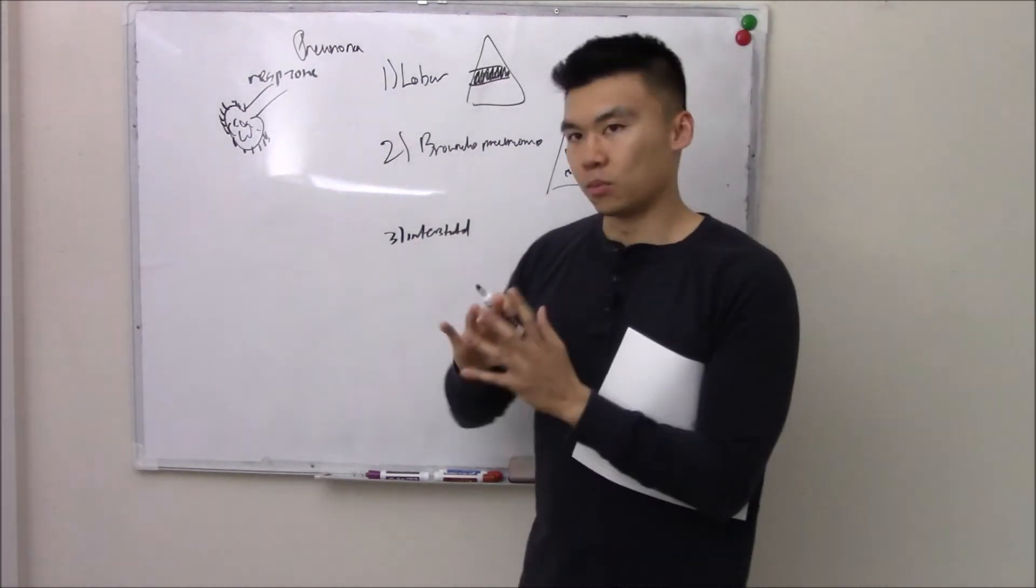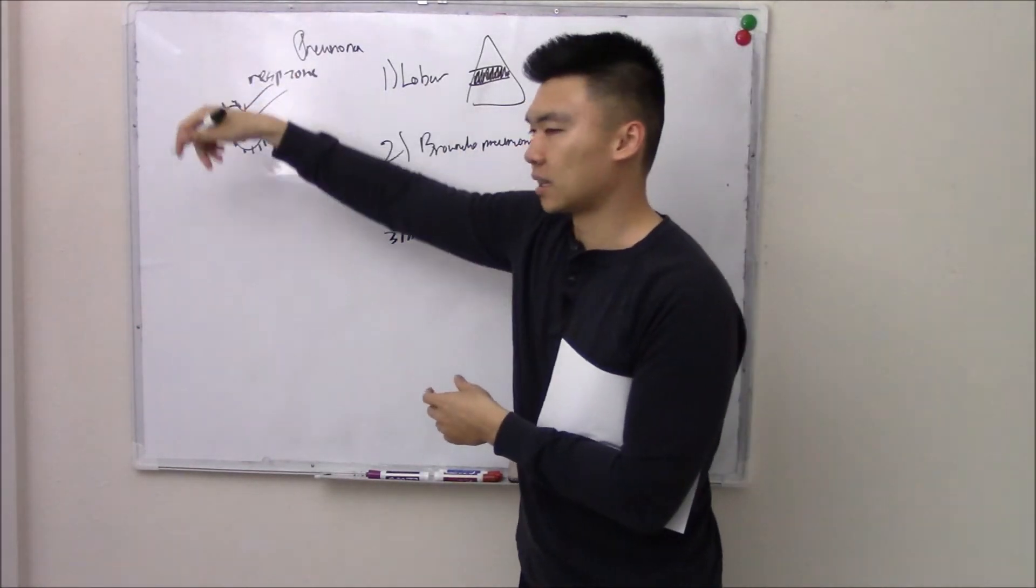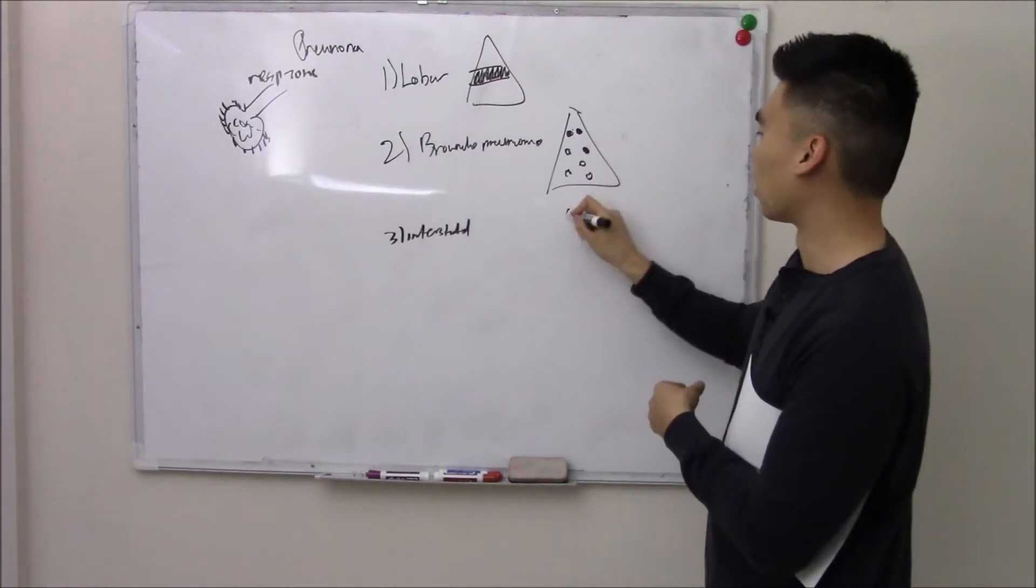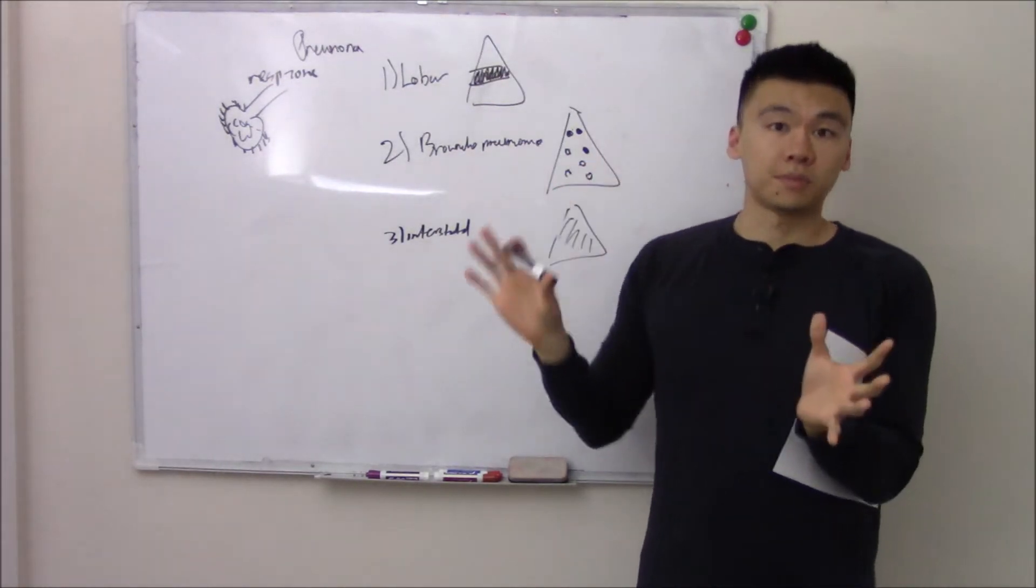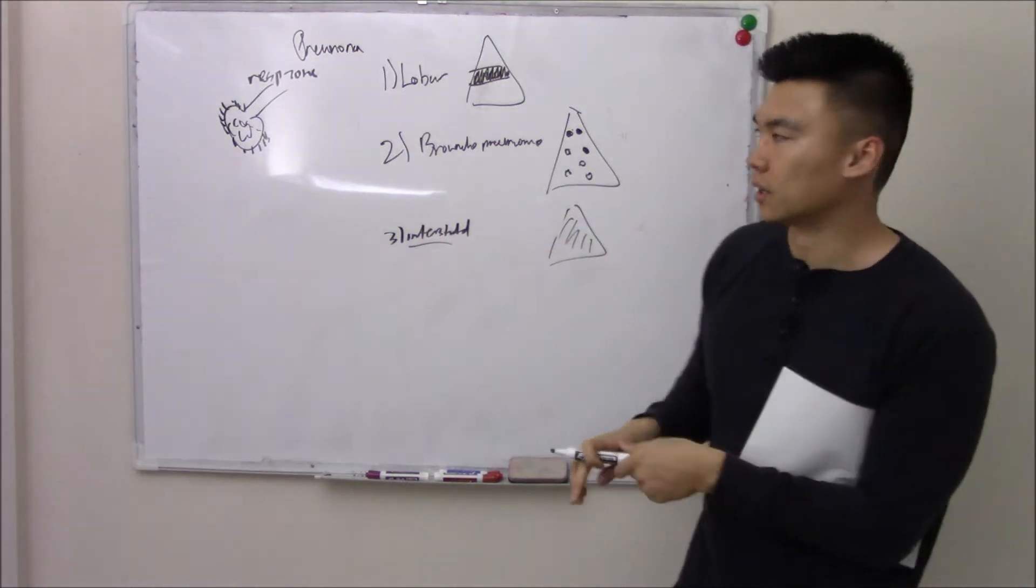And then interstitial pneumonia is kind of more diffuse. It's affecting the outside your alveolar sac. It's a little bit more diffuse. So I can't really draw it. But chest X-ray will show kind of a more diffuse pattern. And you're thinking, oh, I'm working with interstitial pneumonia here.